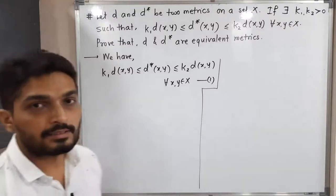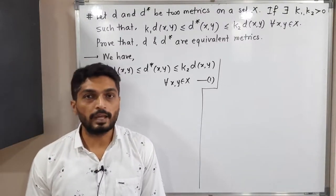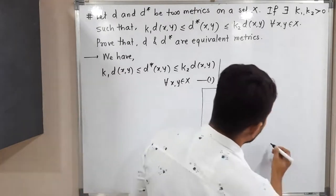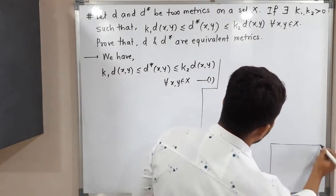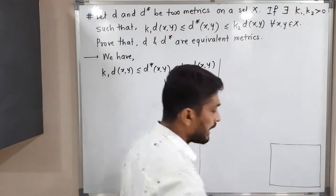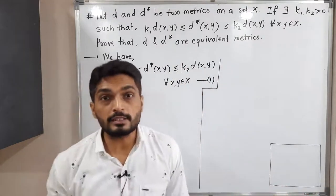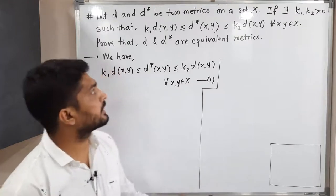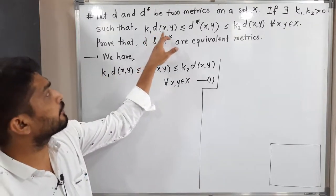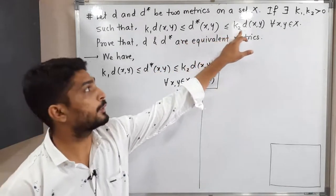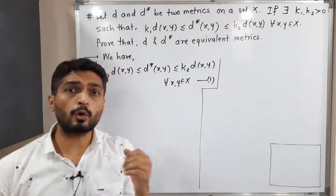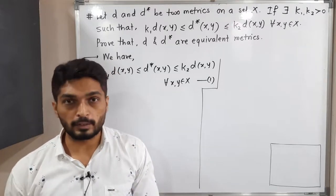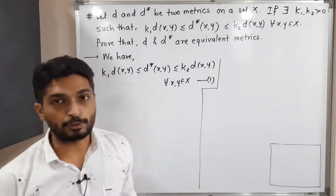Let us discuss this result. We have a non-empty set X, and two metrics d and d* are defined on this set X. The given condition is: k1·d(x,y) ≤ d*(x,y) ≤ k2·d(x,y), which is true for all x,y belonging to X, where k1 and k2 are positive real numbers.